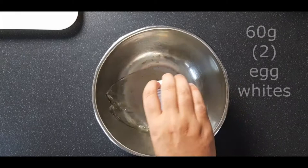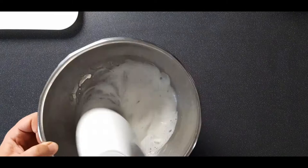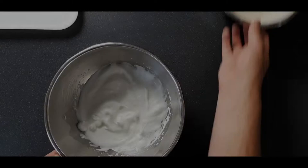Put that to one side. Grab yourself another clean bowl. We're going to put in 60 grams of egg whites, that is about two egg whites. We're going to whisk this with 12 grams or one tablespoon of sugar to a stiff meringue. Whenever you're making meringue, make sure all of your equipment is perfectly clean, otherwise it can stop the egg whites from forming.